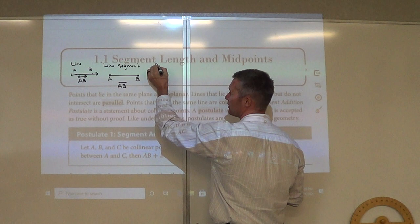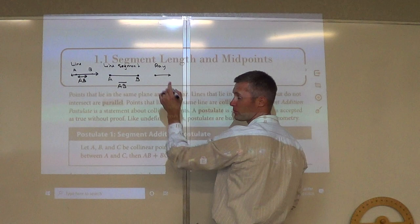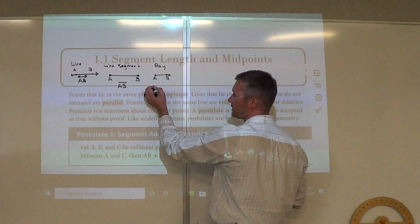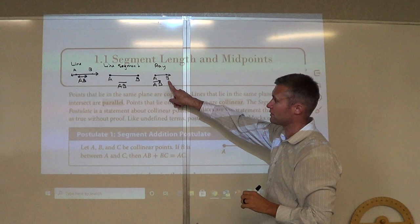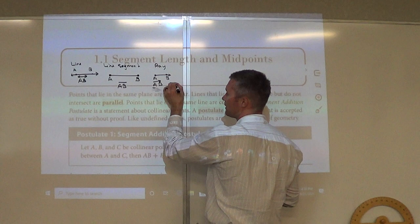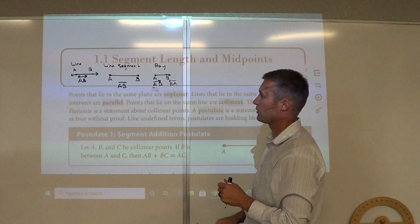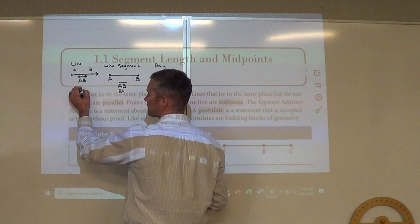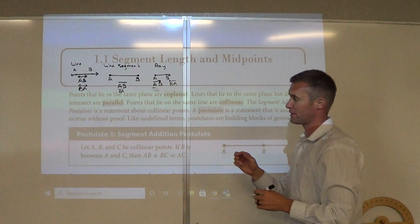We have a ray. A ray starts on one end and continues — it has a starting endpoint and then continues on in the opposite direction. So we label a ray — we could say a ray is AB since the arrow is going to B. We could also go BA. The order doesn't matter for a line segment and a line.